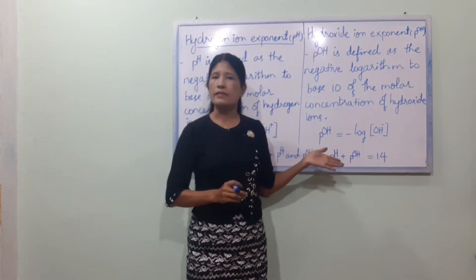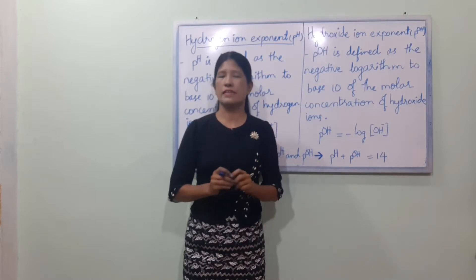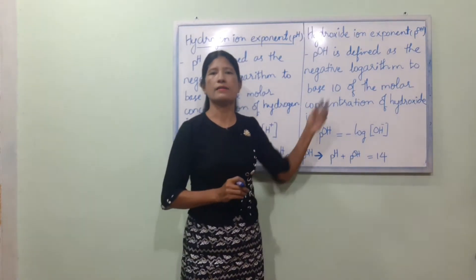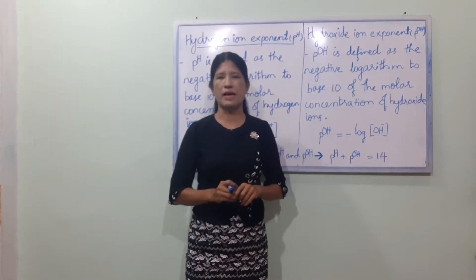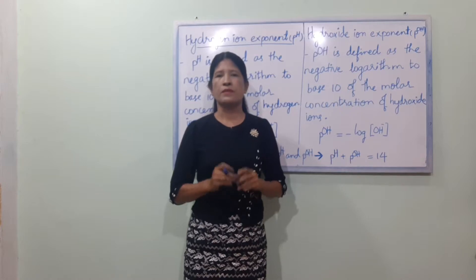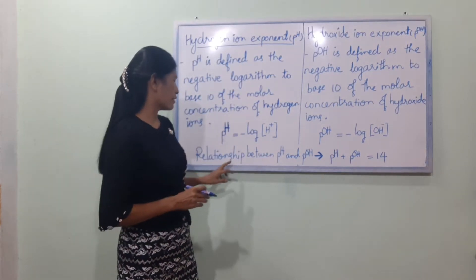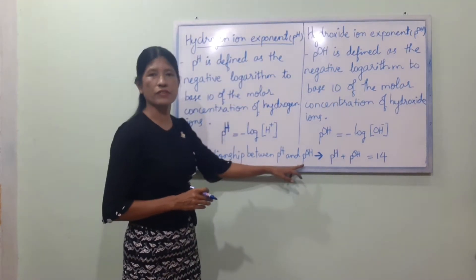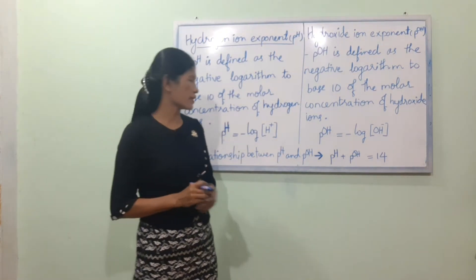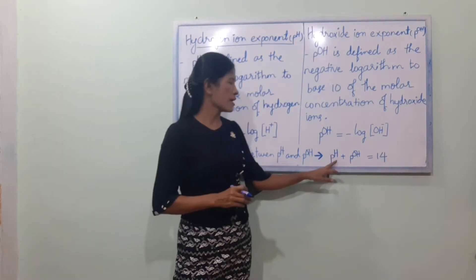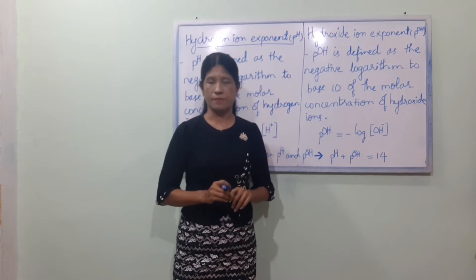We will show the mathematical expression of pOH. In addition, there is the relationship between pH and pOH: pH plus pOH is equal to 14.